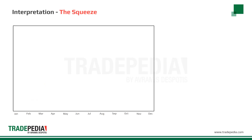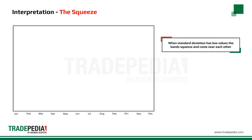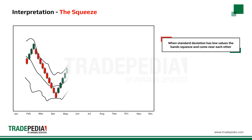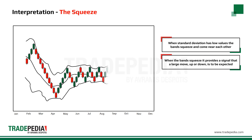The most popular way of using Bollinger Bands is the squeeze. When standard deviation has low values, the bands squeeze and come near each other, implying low volatility. Low volatility begets high volatility. So when the bands squeeze, it provides a signal that a large move, up or down, is to be expected.